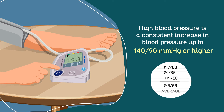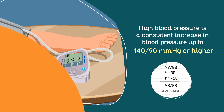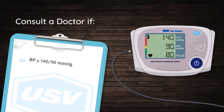High blood pressure is a consistent increase in blood pressure up to 140 by 90 mmHg or higher. If you have high blood pressure, that is, blood pressure more than or equal to 140 by 90 mmHg, then you must consult a doctor.